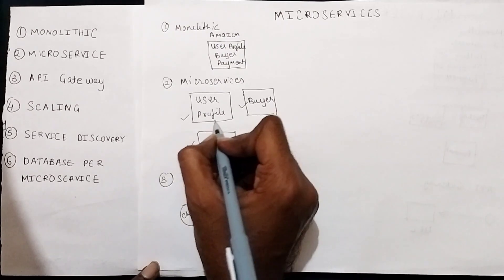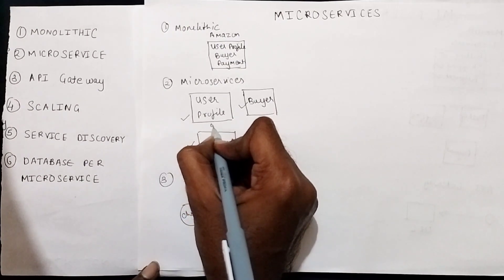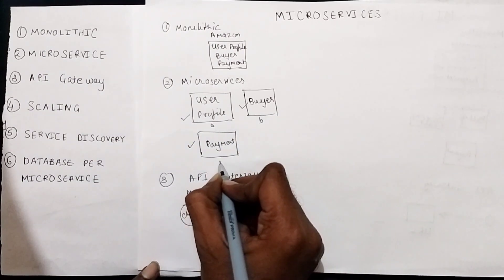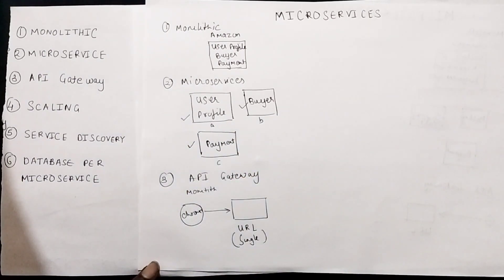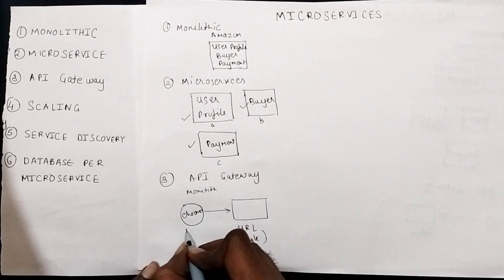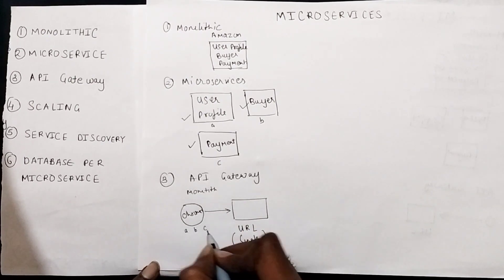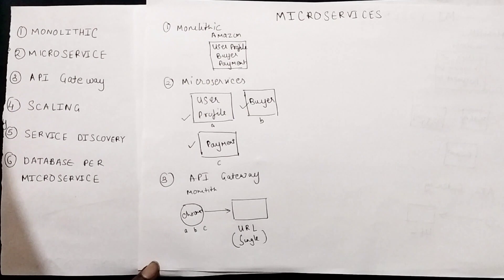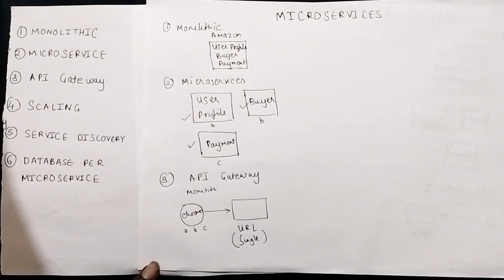In microservices, as you can see, there are three microservices — user, payment, and buyer — and each of them runs on a separate URL. For example, URL A for user, URL B for buyer, and URL C for payment. If the client wants to make a request to each of the microservices, the client needs URL A, URL B, and URL C. This becomes a cumbersome approach because the client has to maintain all the URLs, and if any URL changes, we have to notify the client and make changes on their side.